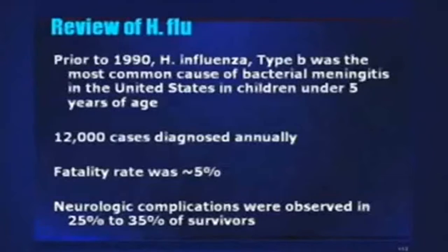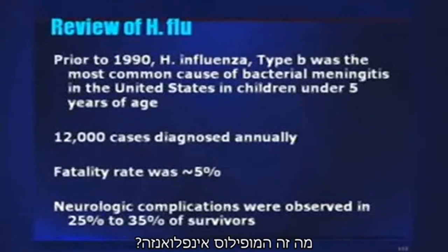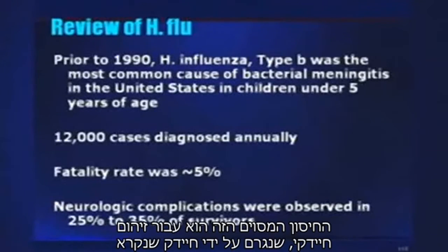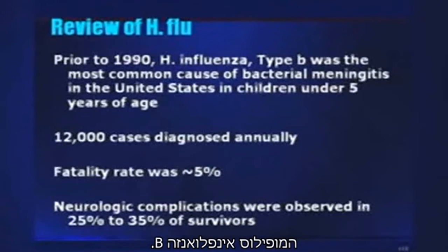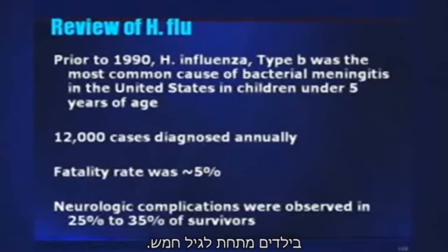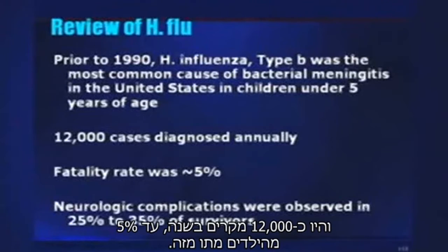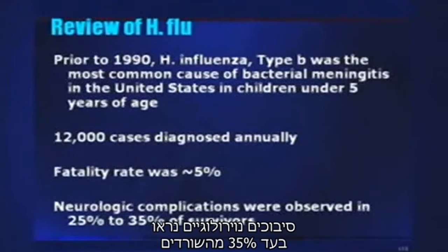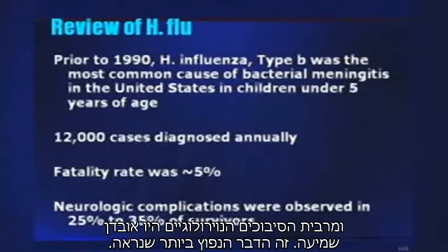We're going on to HIB. What H-flu is — this particular vaccine is for a bacterial infection caused by a bacteria called Haemophilus influenzae type B. During the 1990s, it was the most common cause of bacterial meningitis in kids under the age of five. There were about 12,000 cases a year, up to 5% of kids died from it, and neurological complications were seen in up to 35% of survivors. The most common neurological complication was hearing loss.